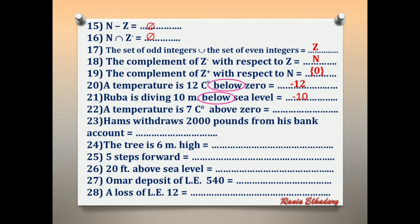Number 22: temperature is 7 degrees above zero. We have the word 'above.' Above means positive. So the answer is positive 7.